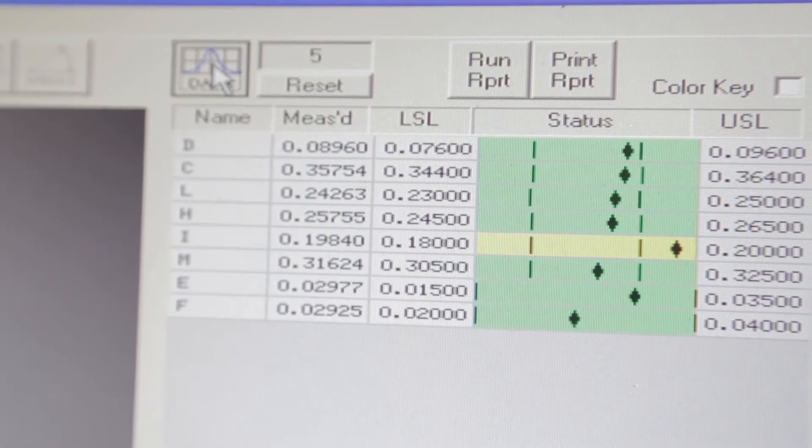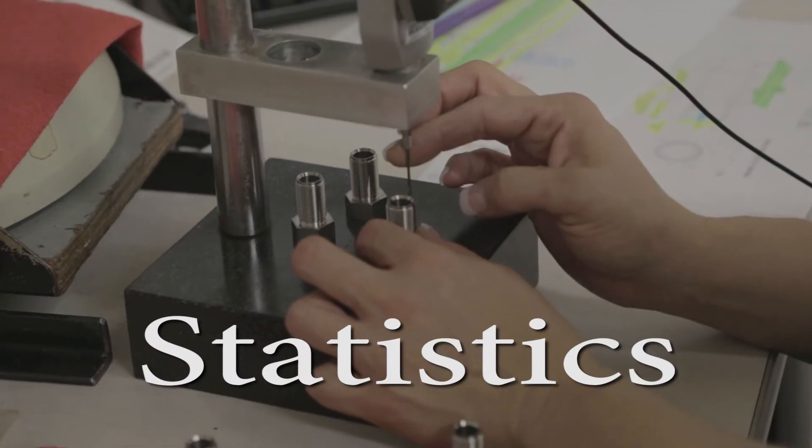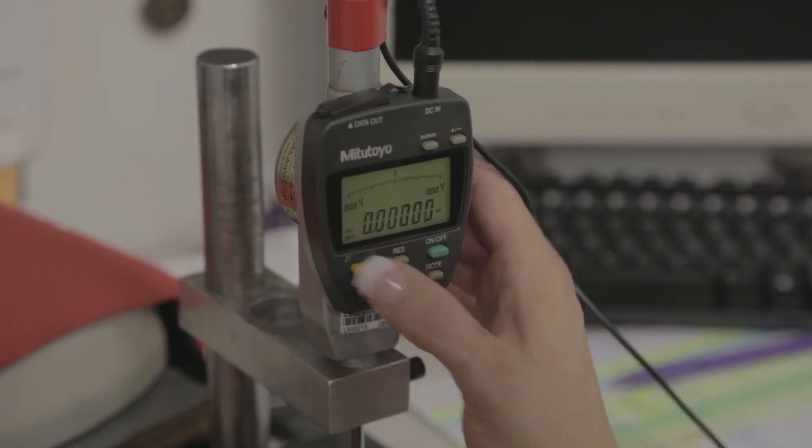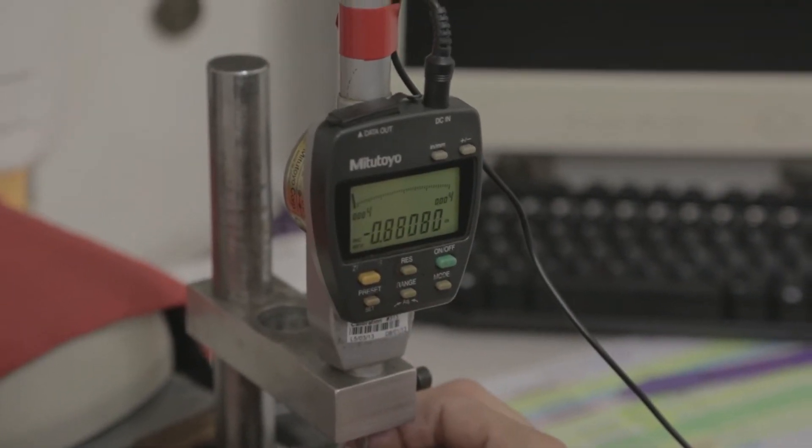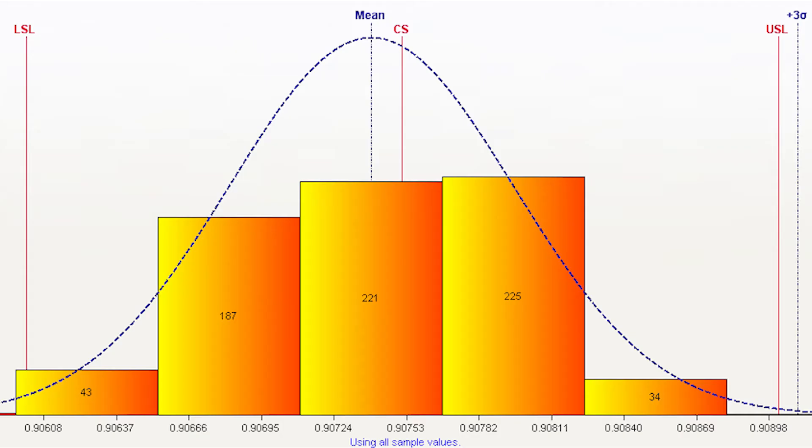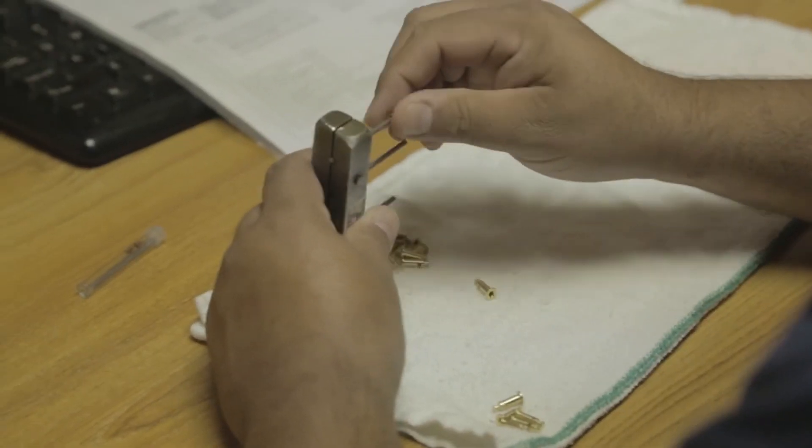We then use these measurements and apply statistics. Using statistics, we look at the average dimension of the parts and the spread of the part sizes to predict the quality of the production.